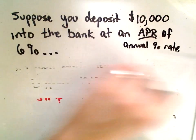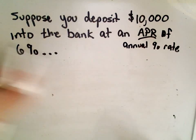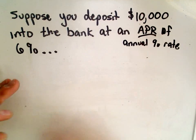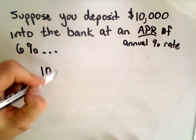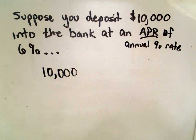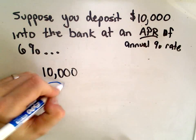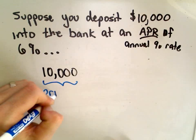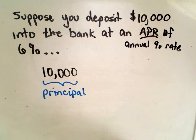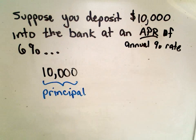Let's do simple interest first. You walk into the bank with $10,000 and that's what we want to deposit. This value of $10,000 is what's called your principal — not the person at school — that's the amount of money you walk in there with. So you've got a principal of $10,000 in this case.